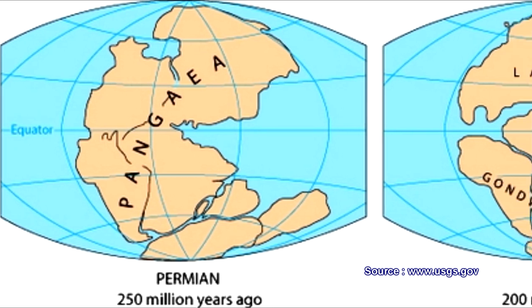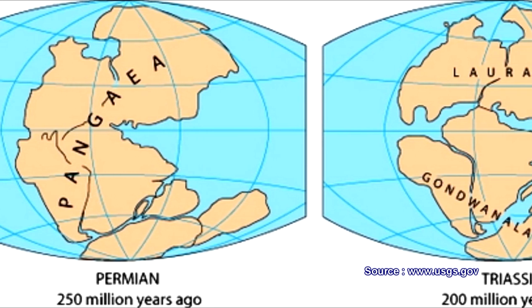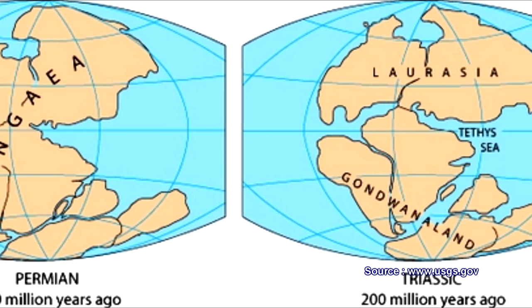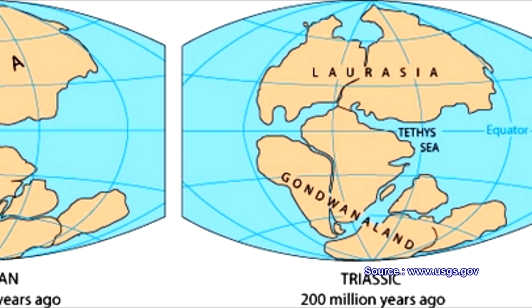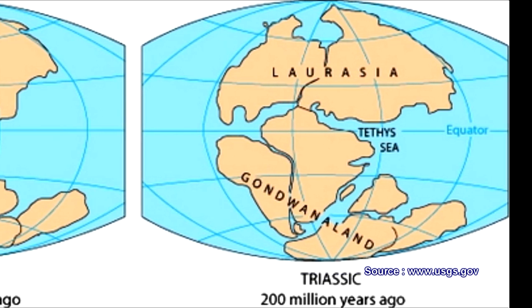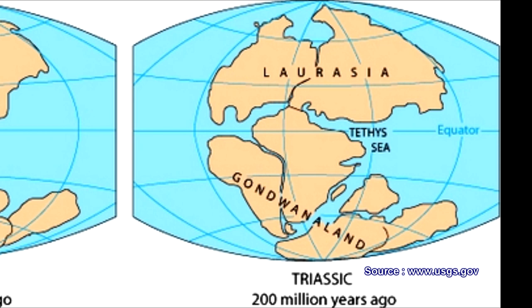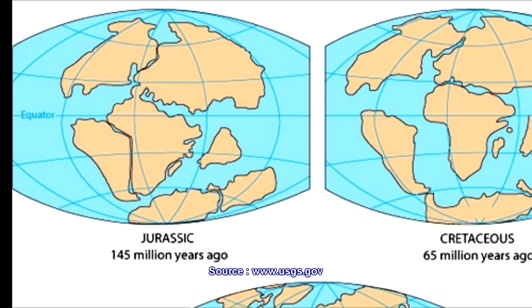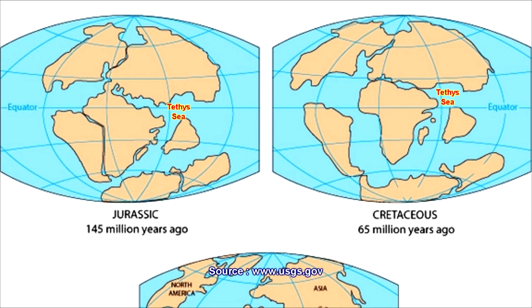During Permocarboniferous times, there was east-west tension due to which Pangea broke up into two continents: the northern continent Laurasia and the southern continent Gondwana land. These two continents were separated by a deep depression into which rivers flowed, and that became the Tethys sea — and from the Tethys sea comes the name Tethyan basins.